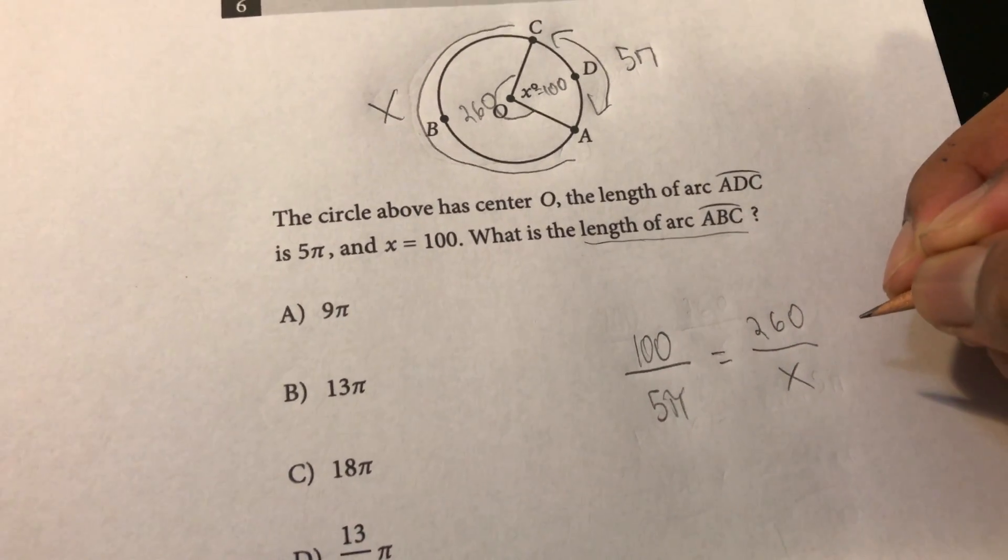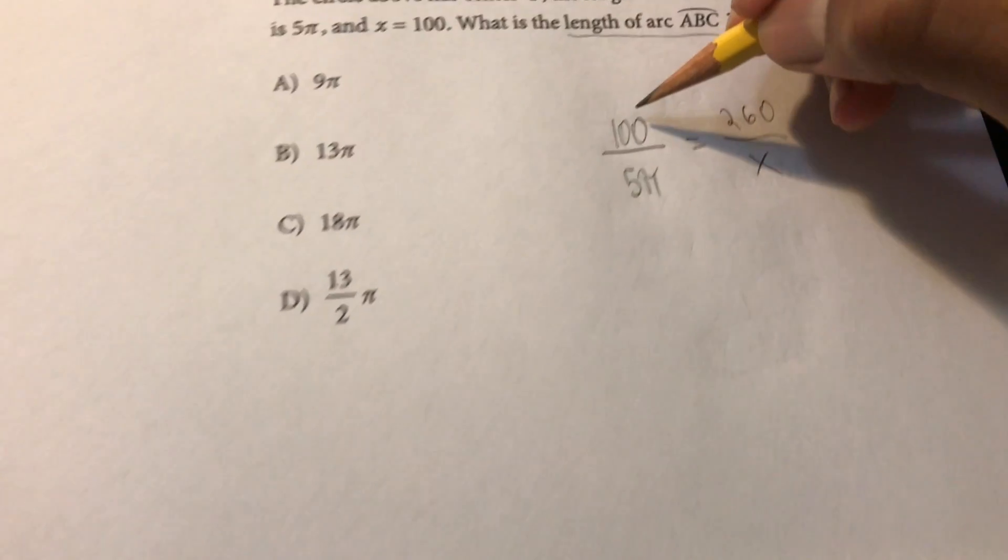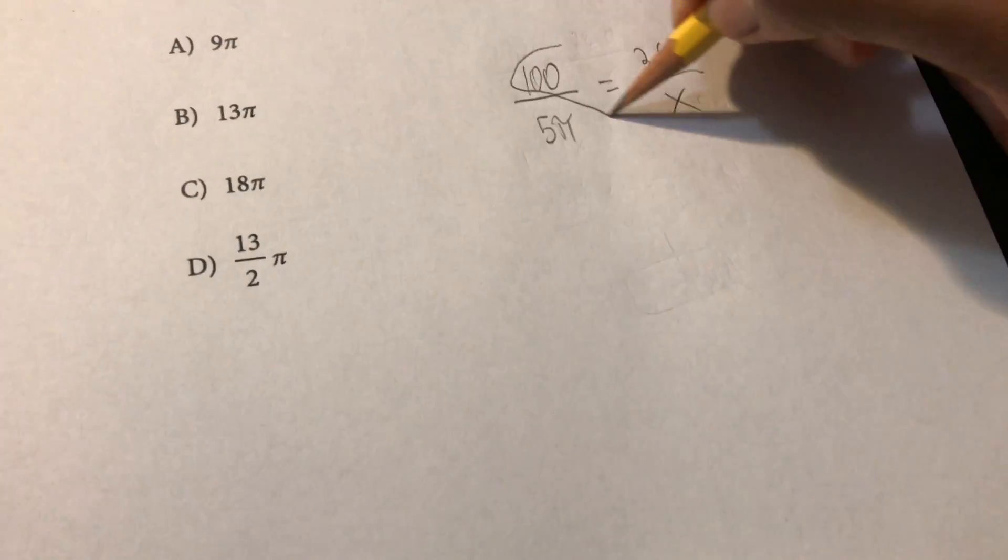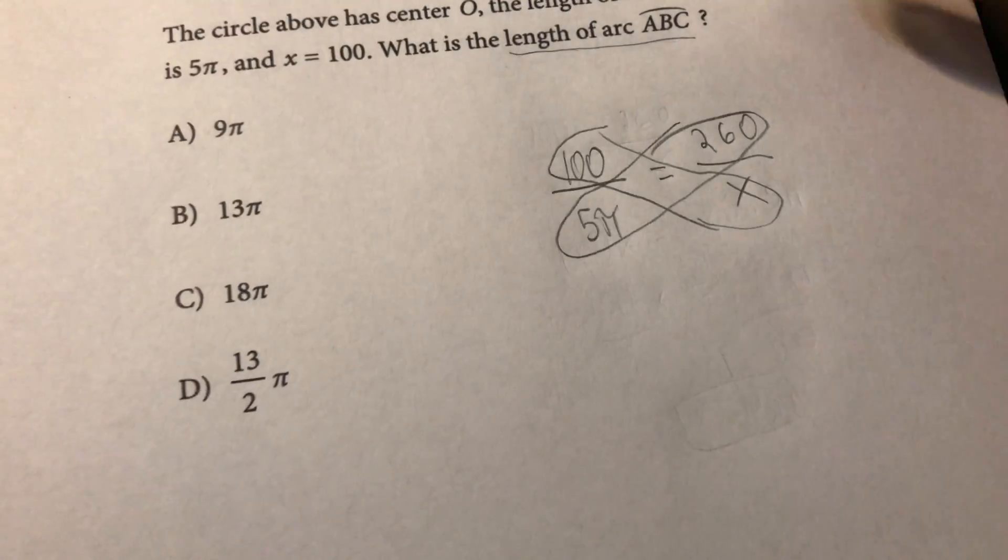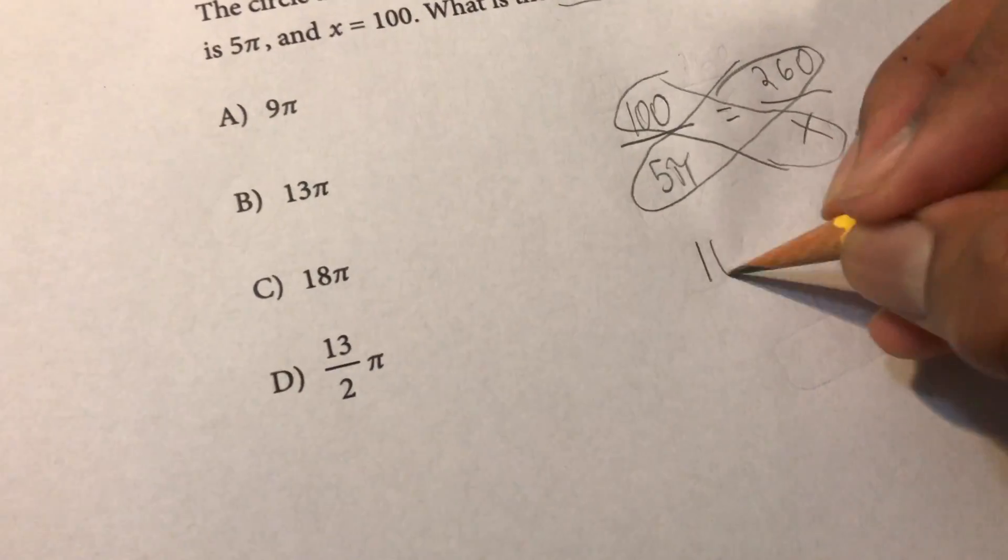And now all we do is solve and to solve this we're going to use something called cross multiplying or the butterfly method and all we have to do is multiply diagonally like so and we get 100x.